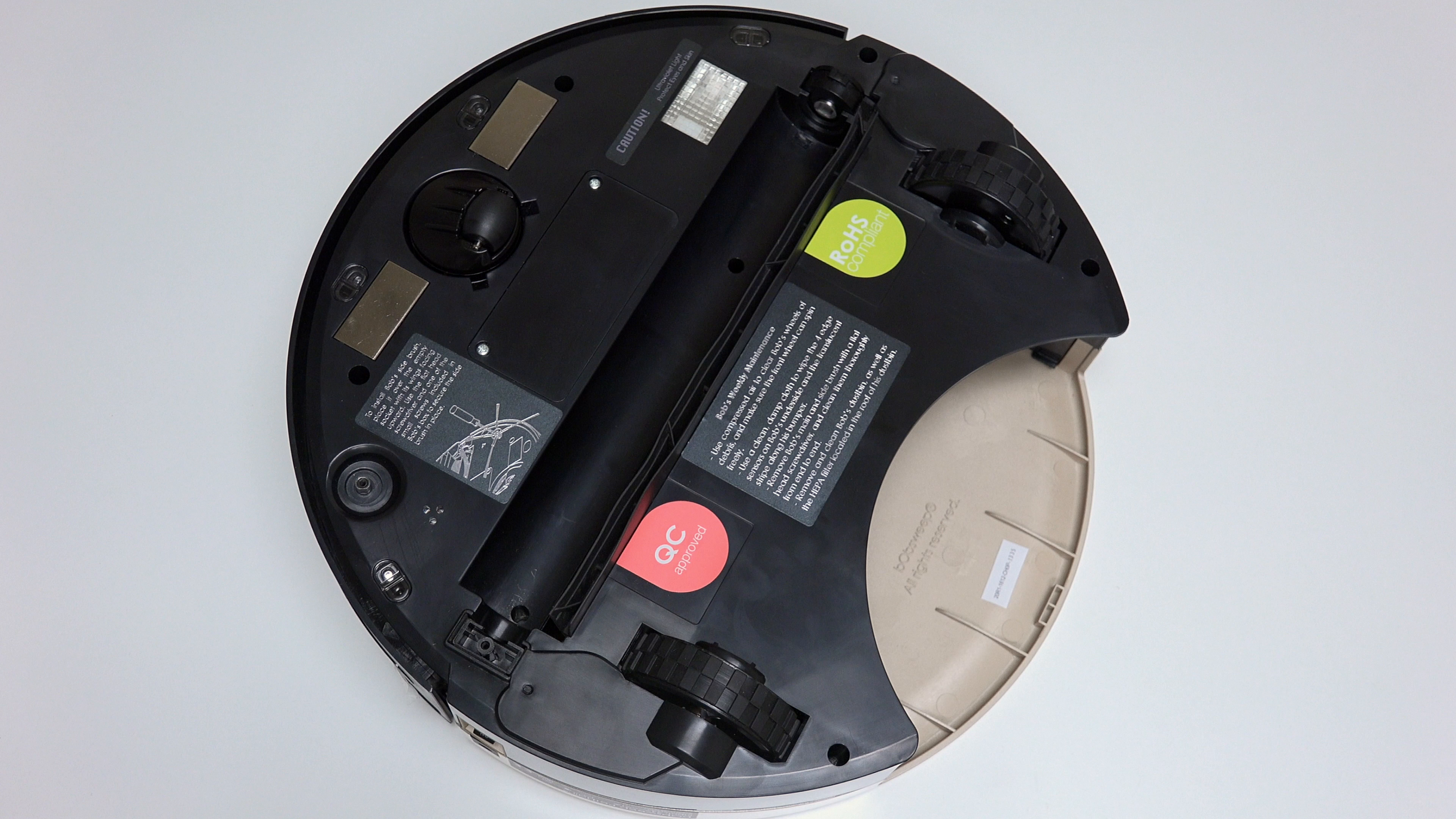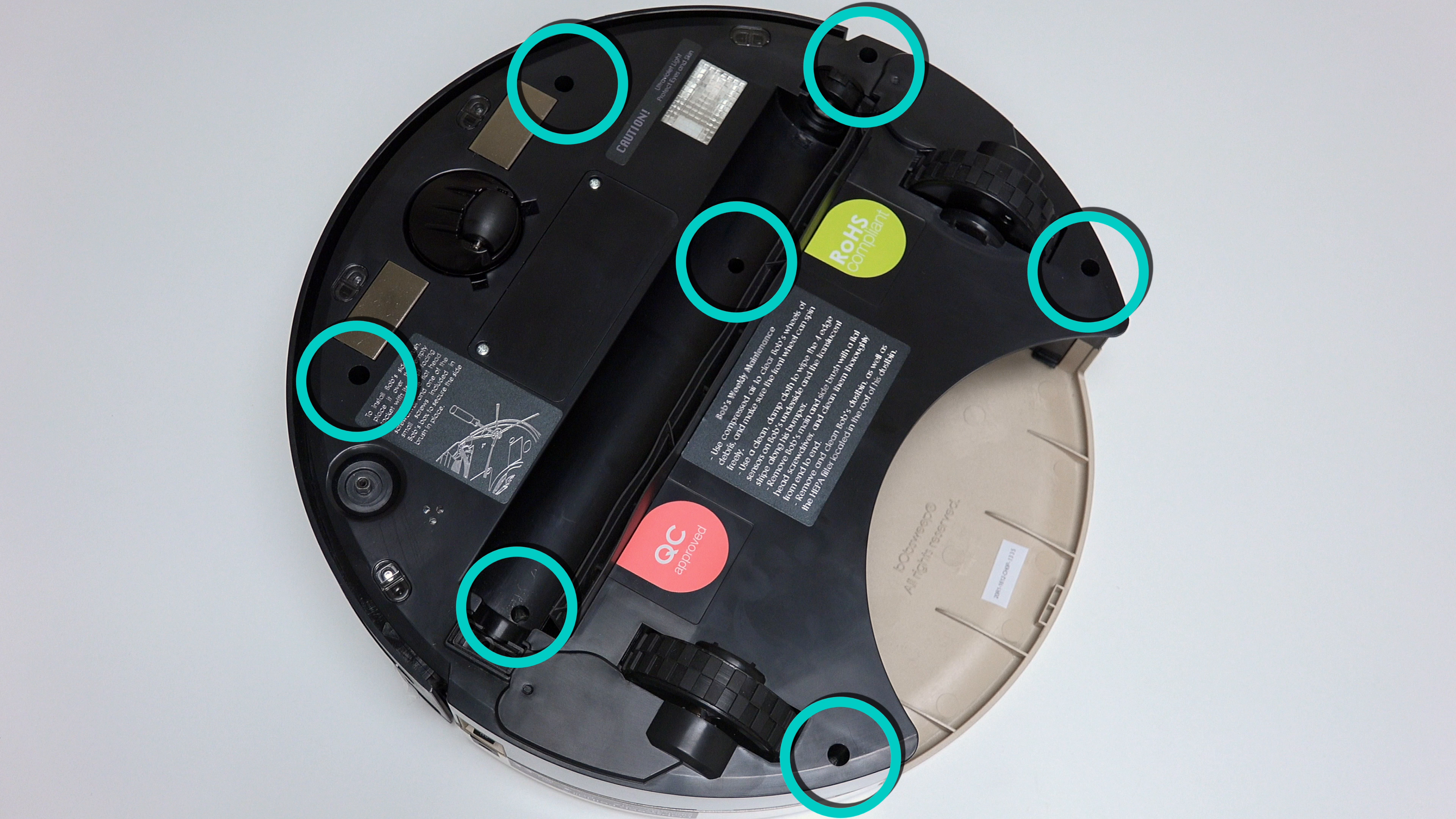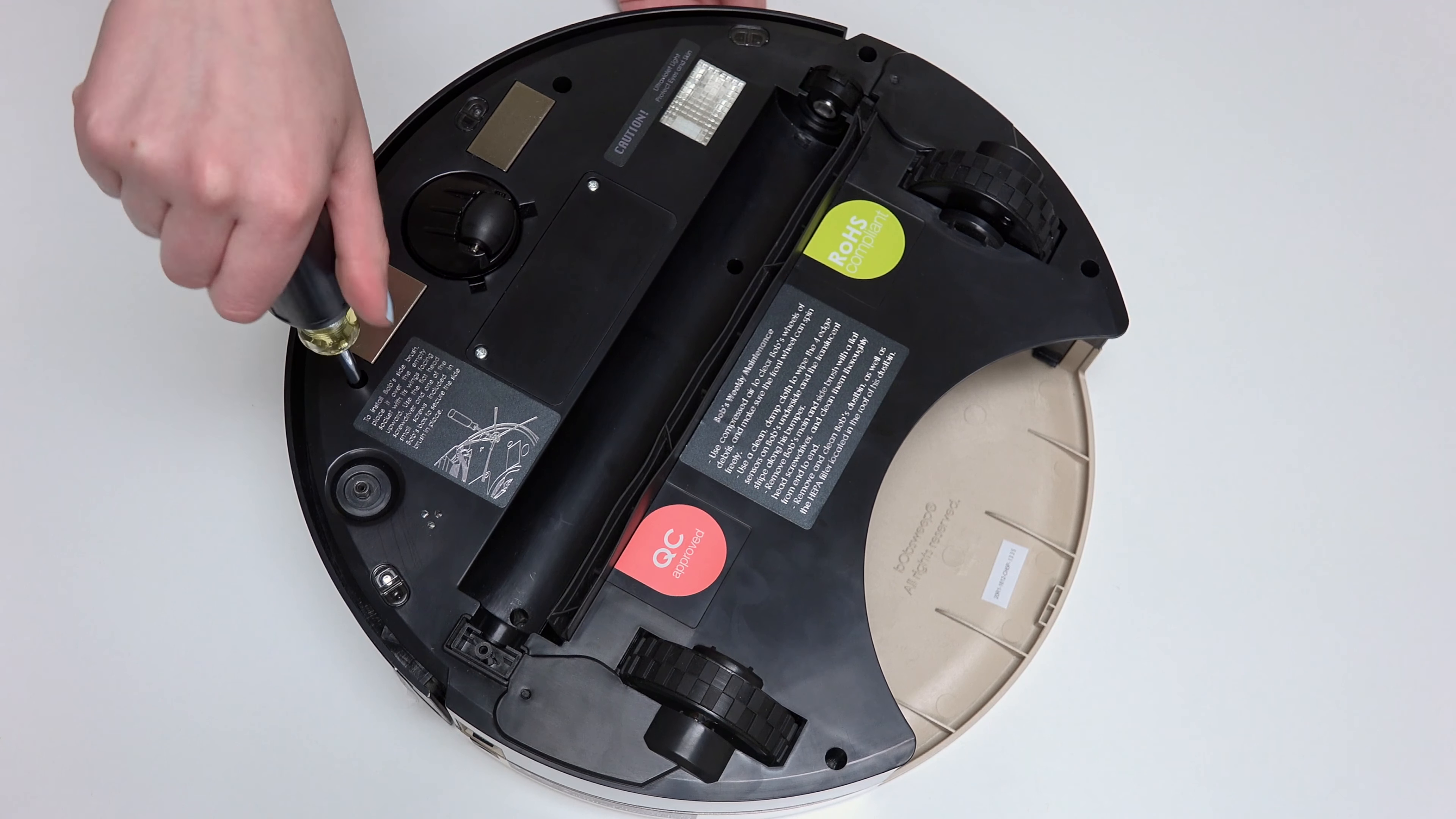Use a Phillips head screwdriver to remove the seven screws on Bob's underside that hold him together. One screw on each side of the front wheel.